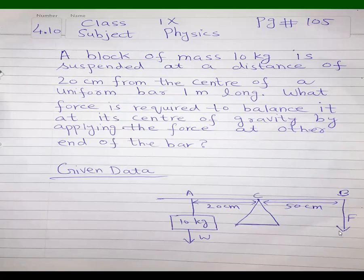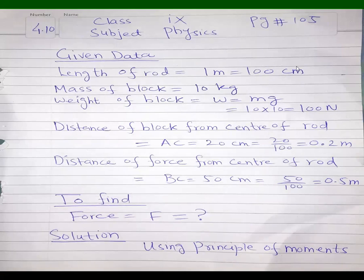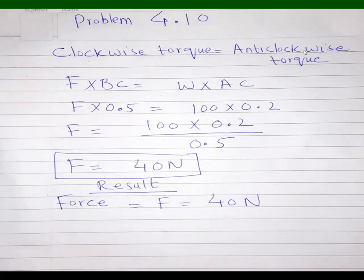Using clockwise torque = anti-clockwise torque: F × 50 cm = 10 × 10 × 20 cm. Converting to meters: F × 0.5 = 100 × 0.2, giving F = 40 N. Result: force F = 40 N. I hope you understand all these numericals. If you have any questions, please feel free to ask. Thank you.